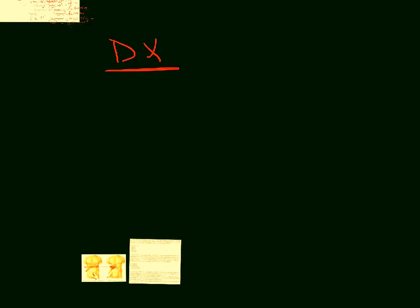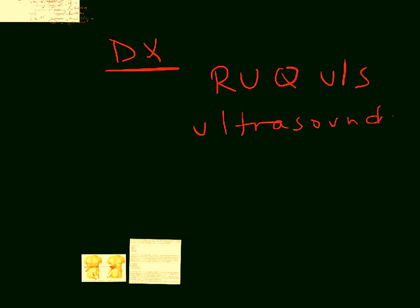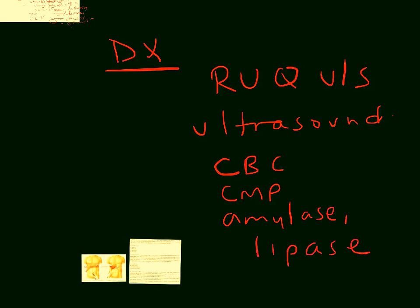How do we diagnose cholelithiasis? The gold standard is a right upper quadrant ultrasound, which will show the stones in the gallbladder. Other tests commonly done include a CBC, metabolic labs, and lipase, but they're not specifically diagnostic and can sometimes be normal. However, the CBC is important because an elevated white blood cell count can indicate inflammation.